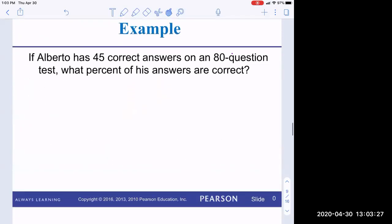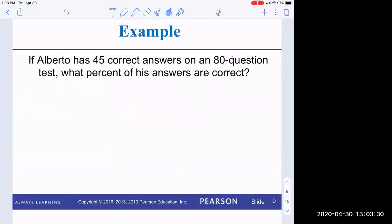Okay, next one. Alberto has 45 correct answers on an 80-question test. What percent of his answers are correct? So my unknown is a percent. I set it up. Let's see. 80 questions is my 100%. He answered 45, which in this case is a little more than 50%. So I already know my answer is a little more than 50% just by my partition. There's my X.